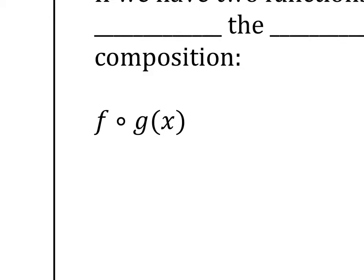That circle means 'of.' Basically what you're going to do is change that to parentheses, so it's f of g of x — meaning that g of x is now inside f.